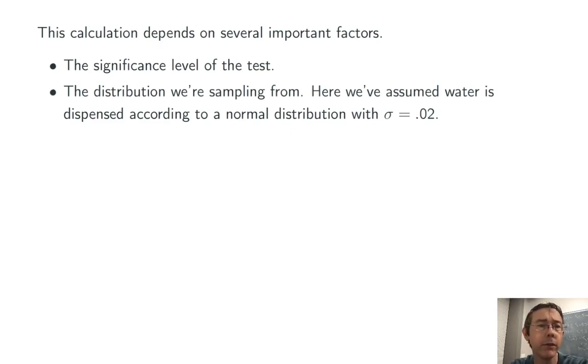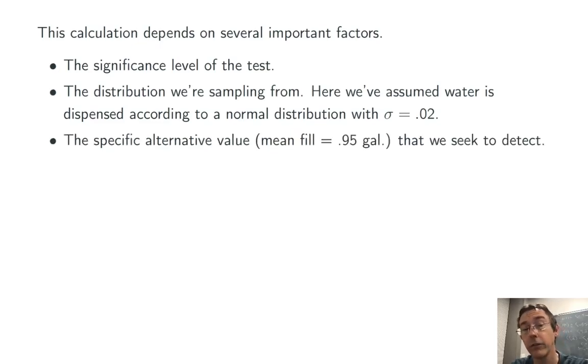We used both of these things in the first half of our calculation when we were computing the rejection region for our test. The other two pieces of information that were important here were the specific alternative value that we were looking at. In this case, it was 0.95 gallons that we were using when we were computing our power. Finally, the sample size n. Obviously, that came into play in several occasions here.